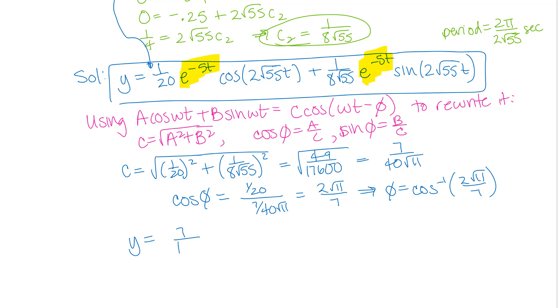So, I'll have my e to the negative 5t times c out front. And so there is my answer kind of rewritten as a single trig function with that decreasing amplitude out front caused by that exponential decay function.